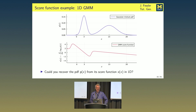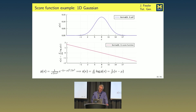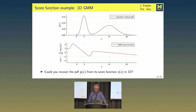Can you recover the PDF from its score function in the 1D case? In general, to recover a function from its derivative you need to think about a constant, but we know PDFs integrate to 1, so we get the constant from that. At least in 1D you could recover the PDF from the score function if you needed it. But for drawing samples you don't need it — all you need is the score function.